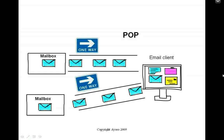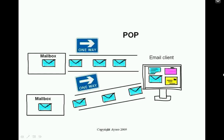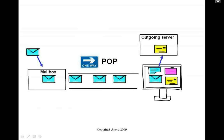Multiple email addresses can pop into one email client. The email client is the software program that allows you to read and manage your email. With an email client installed on a computer — such as Outlook, Live Mail, Entourage, or Thunderbird — the emails are stored on the computer. Sent mail goes via an outgoing server called the SMTP server, which means Simple Mail Transfer Protocol. The sent mail is also stored on the computer it's sent from.